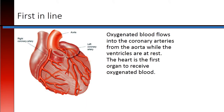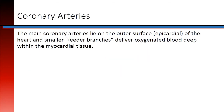Oxygenated blood flows into the coronary arteries from the aorta, while the ventricles are at rest. The heart is the first organ to receive oxygenated blood. The main coronary arteries lie on the outer surface, or epicardial surface, of the heart, and smaller feeder branches deliver oxygenated blood deep within the myocardial tissue.